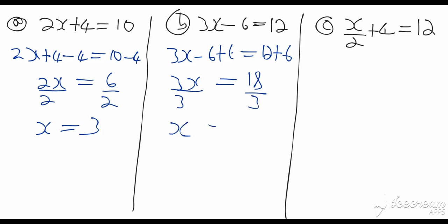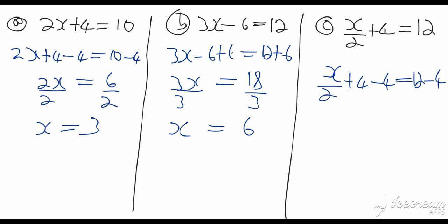Since 3x equals eighteen and we want x, we do the opposite — divide both sides by three — so x equals six. For the third example: x over two plus four equals twelve. It doesn't matter as long as you follow the procedure. We want x by itself, so start by getting rid of the plus four. Since it's positive four, subtract four from both sides: x over two plus four minus four equals twelve minus four, giving x over two equals eight.